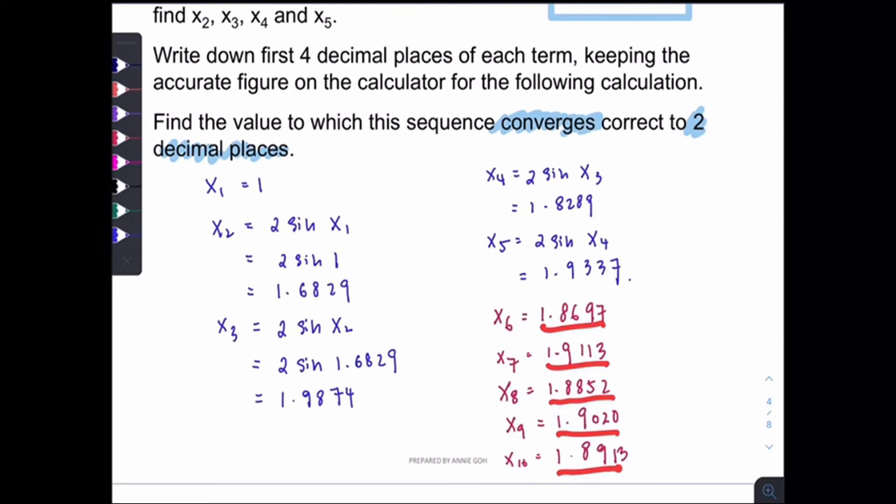But you can see that the pattern actually gets closer and closer to a fixed value, which is 1.90 or 1.89. So now, just keep on finding. x11 is 1.8981. x12 is 1.8938, still different. x13 is 1.8966, still different. x14 is 1.8948.